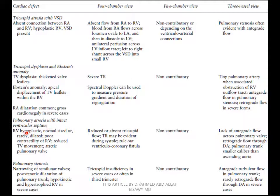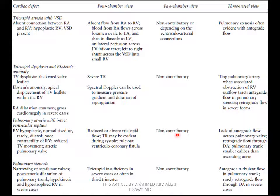Pulmonary atresia with intact ventricular septum: the right ventricle is hypoplastic, normal-sized, or rarely dilated, with poor contractility of the right ventricle and reduced tricuspid valve movement, or atretic pulmonary valve. In the four-chamber view, we see reduced or absent tricuspid flow; tricuspid regurgitation may be evident. Rule out ventricular-coronary fistula. Five-chamber view is non-contributory. Three-vessel view shows lack of antegrade flow across the pulmonary valve, retrograde flow through the DA into the pulmonary trunk, with smaller caliber than the ascending aorta.